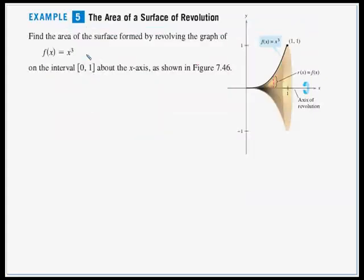Example 5: Find the area of the surface formed by revolving the graph of f(x) = x³ on the interval from 0 to 1 about the x-axis. The curve x³ between 0 and 1 is in the first quadrant, opening upward almost like a parabola. We're going to create that arc and then spin it around the x-axis.